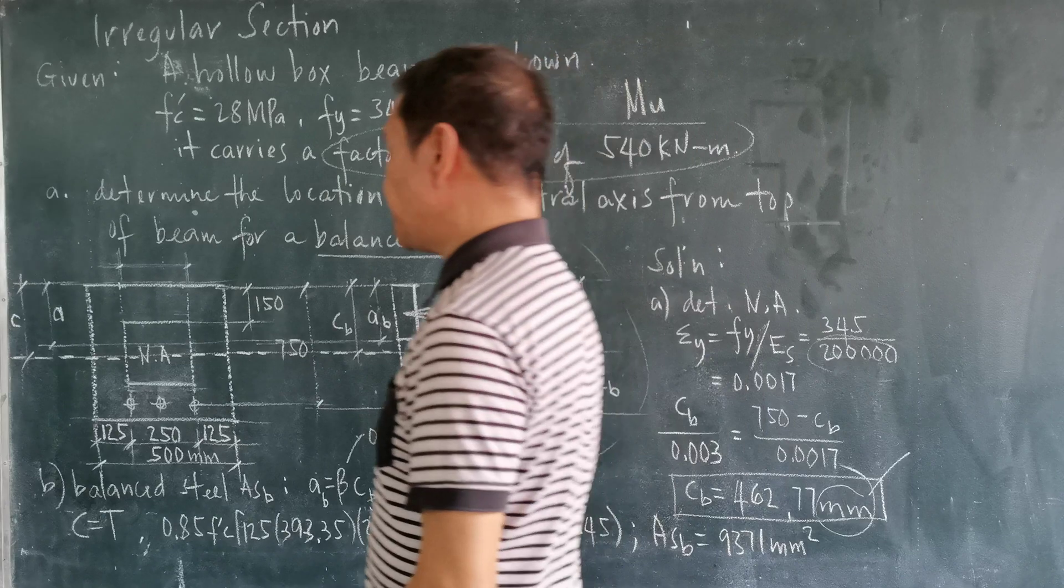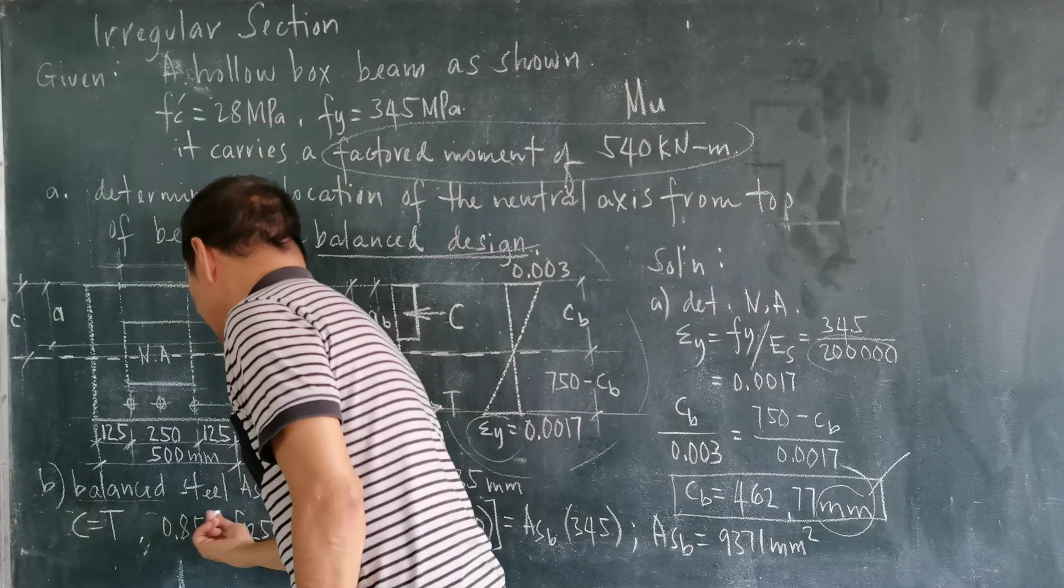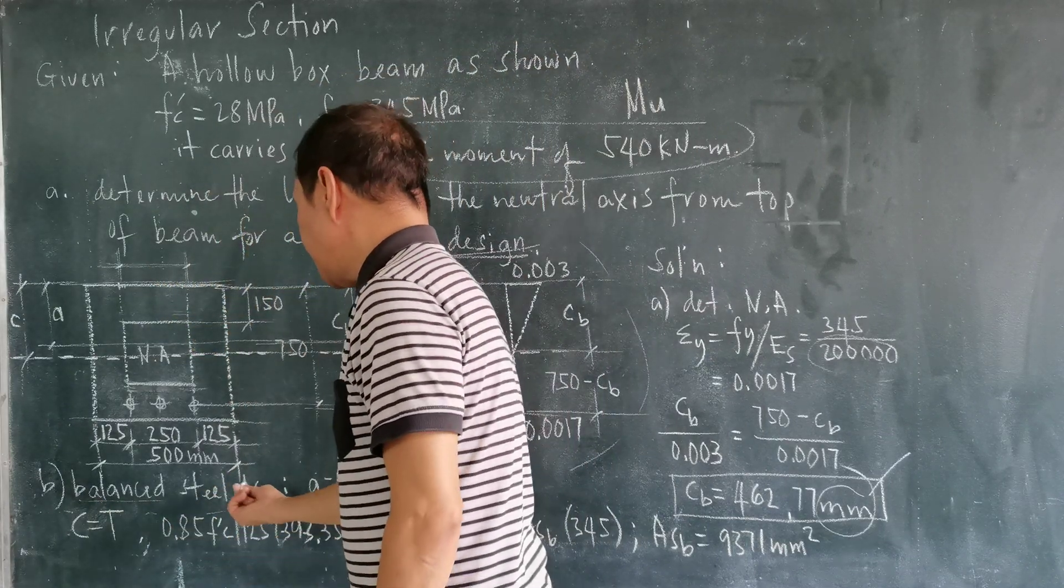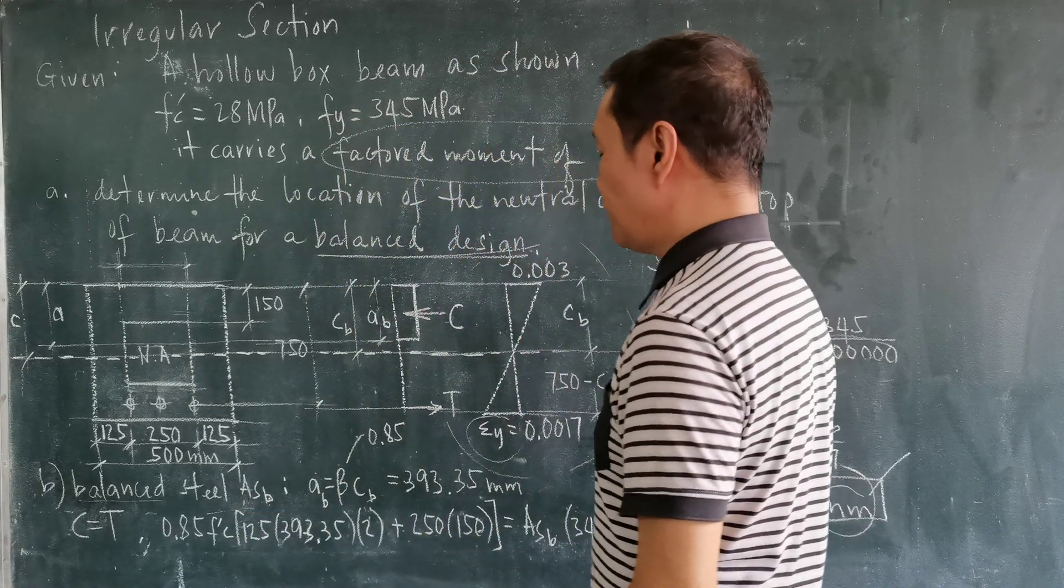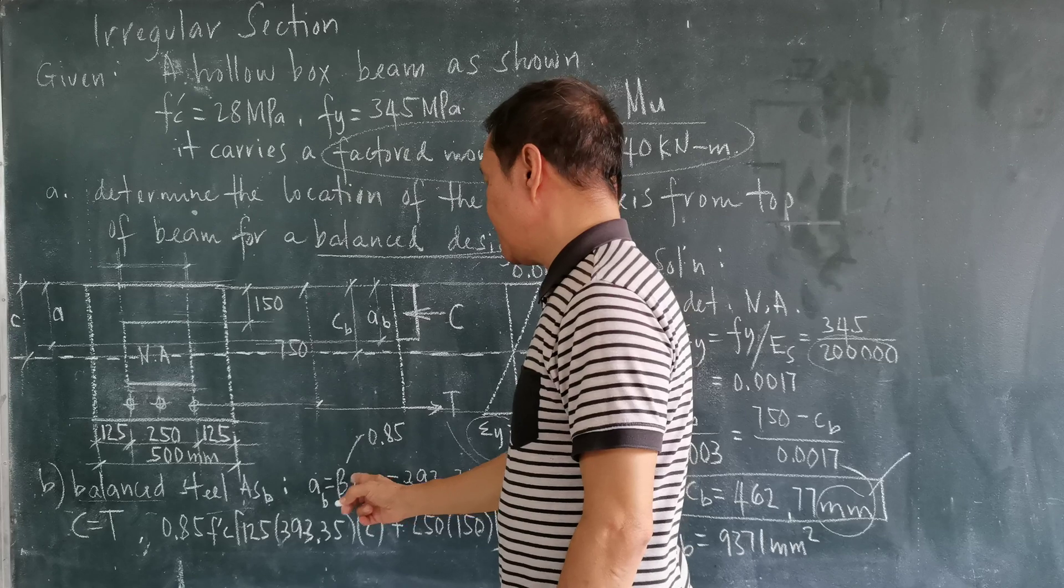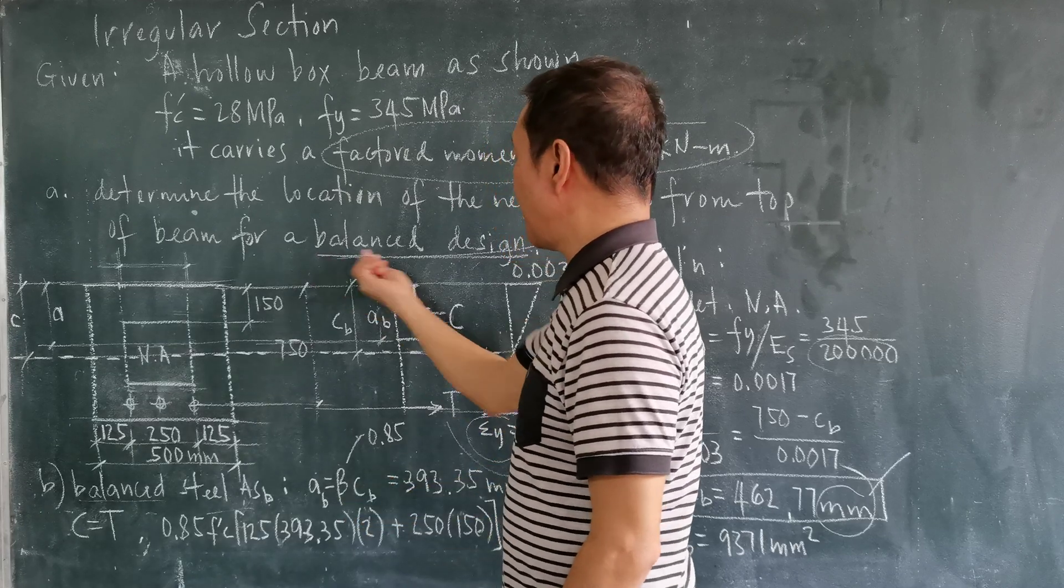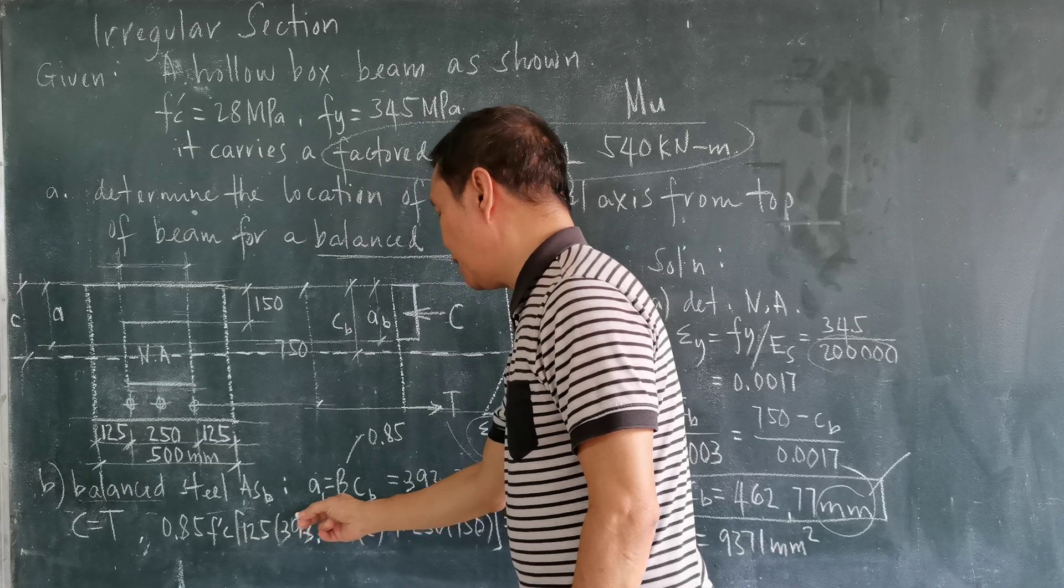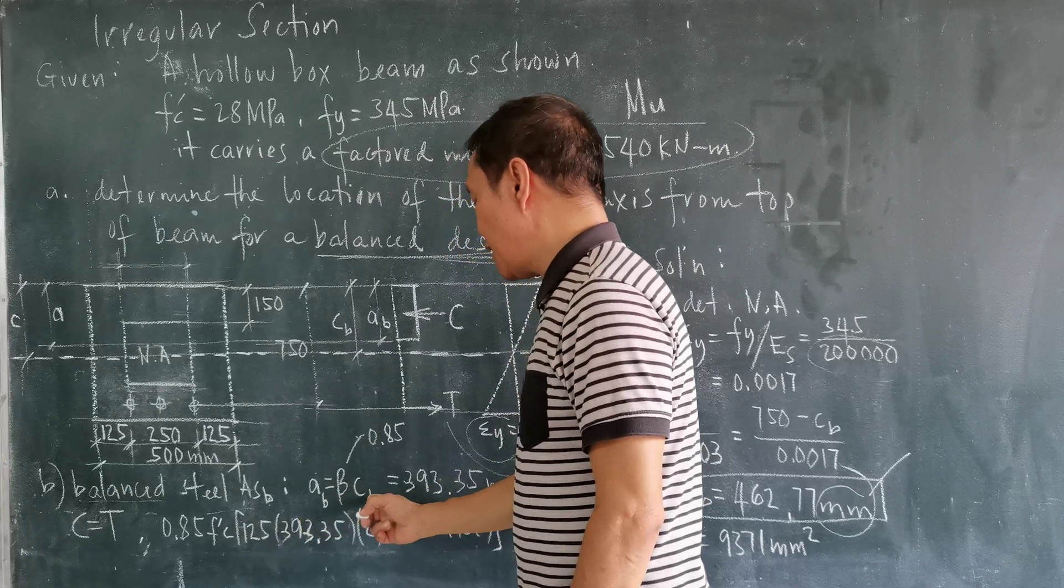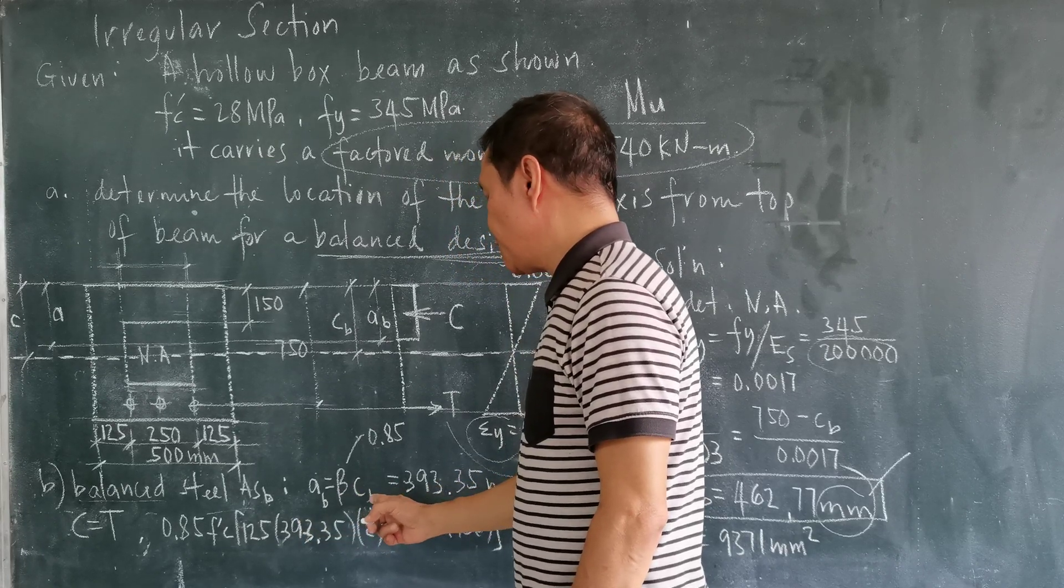To be able to solve the next requirement, the balanced steel area, which is A sub SB, we will now make use of the formula A equals beta times C. But since it is a balanced design, this will have a subscript of B.